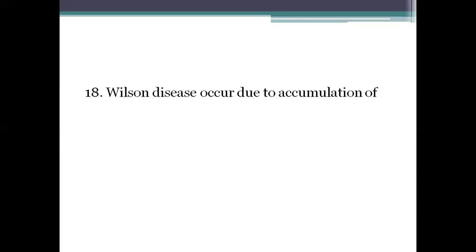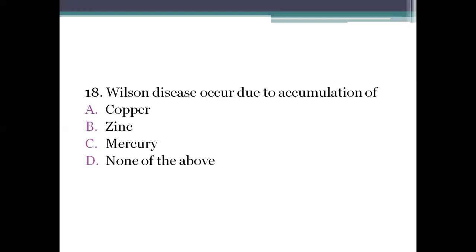Next question: Wilson's disease occurs due to accumulation of? Option A: copper. Option B: zinc. Option C: mercury. Option D: none of the above. The right answer is option A, copper. Wilson's disease is a rare inherited condition in which excessive copper levels build up in several organs, especially the liver, brain, and eyes.